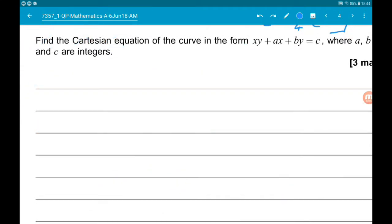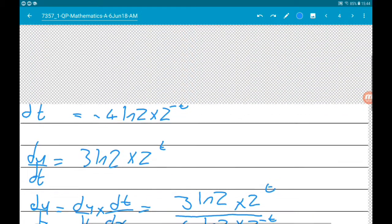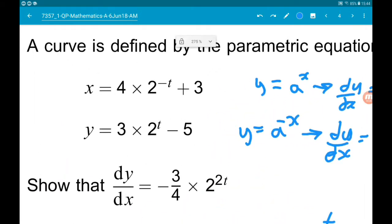In part b, we'll just find the Cartesian equation of the curve, so in terms of x and y, in the form xy add ax add by is equal to c, where a, b and c are integers. So let's think about what we know. We know what x and y are in terms of t. So if we can rearrange these equations, maybe to carry 2 to the t terms on their own, then we might be able to do some magic.